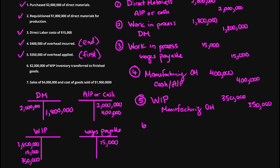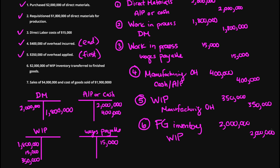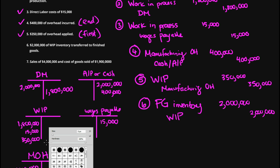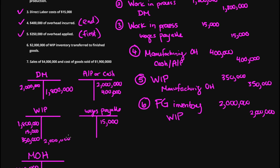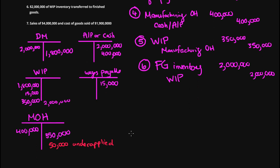The sixth transaction: $2,000,000 of work in process inventory is transferred to finished goods. This is straightforward — we debit finished goods inventory for $2,000,000 since that account is increasing, and we credit work in process for $2,000,000. I'll add the $2,000,000 credit to the WIP T-account and create a finished goods T-account with a $2,000,000 debit.